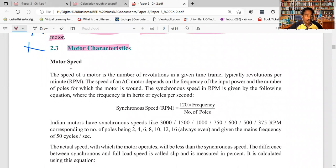What are the characteristics? What is the speed and why is it important? This is the formula for synchronous speed in RPM: 120 times frequency divided by number of poles.